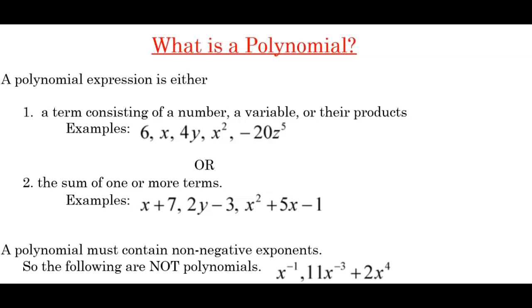So jumping right in, a polynomial expression is either a term consisting of a number, a variable, or their products, for example 6, x, 4y, x², -20c⁵, or the sum of one or more terms, for example x + 7, 2y - 3, x² + 5x - 1.